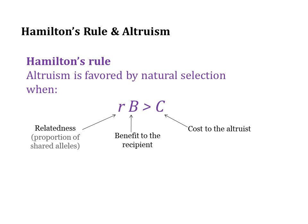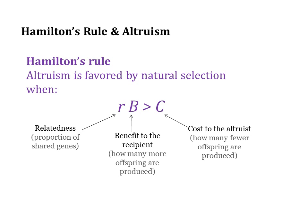Relatedness is the proportion of alleles shared between the altruist and the recipient of altruistic behavior. The benefit to the recipient is the number of offspring produced by the recipient that would not have been able to be produced without the help of the altruist. The cost to the altruist is the number of offspring the altruist is unable to produce as a result of the altruistic behavior.